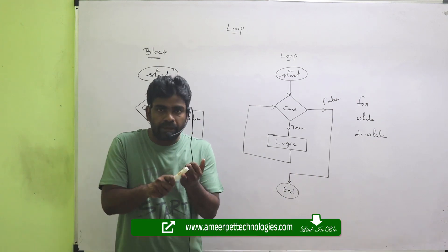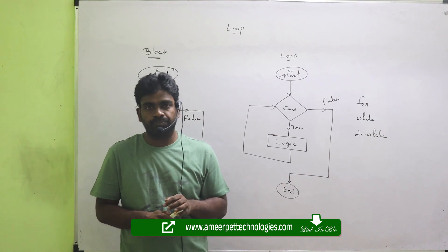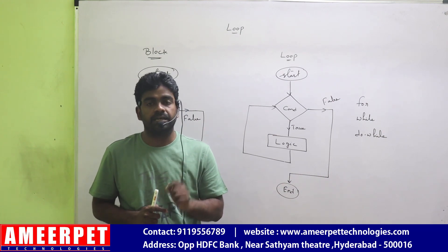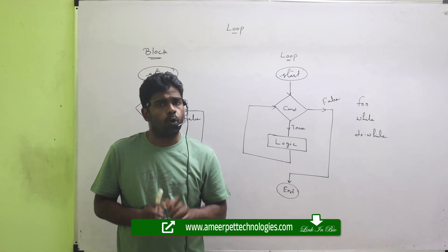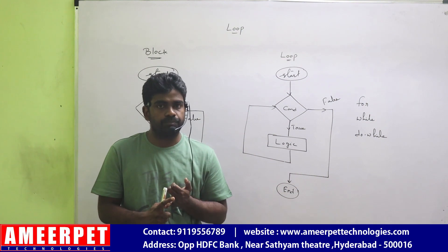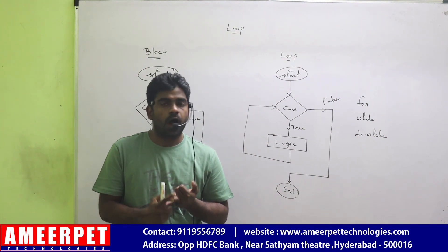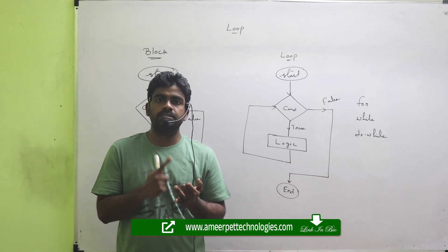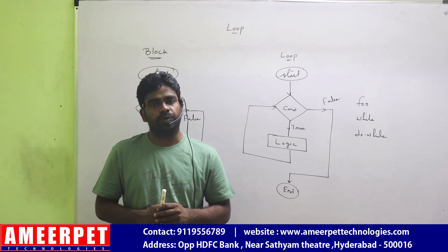So when we know exactly how many repetitions are there, go with the for loop. If we don't know how many iterations are present, go with the while loop. Hope you understood the difference between block and loop, how many times each gets executed. Please practice. Thank you all.